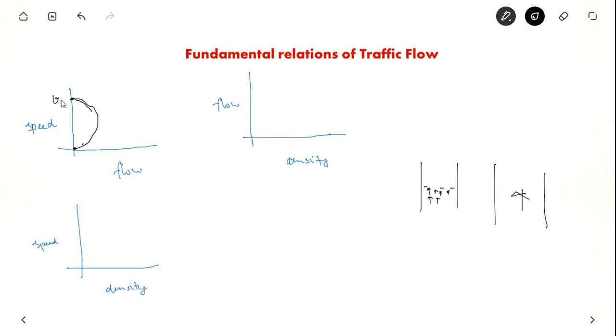This is VF. VF is free flow speed which we saw here. And this is zero speed and this is zero flow and this is the maximum flow. Similarly, you have speed versus density graph.